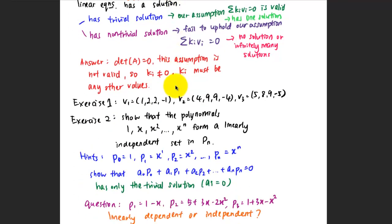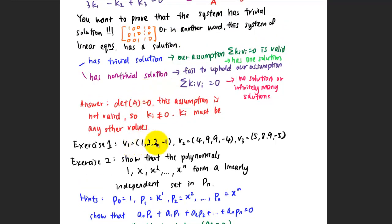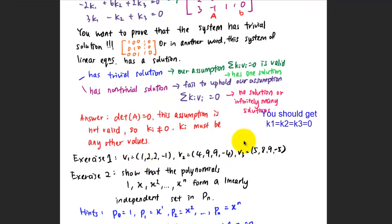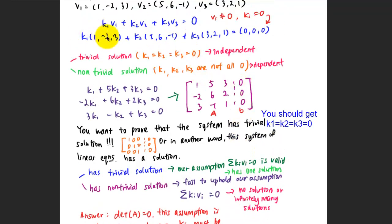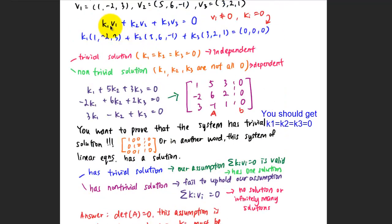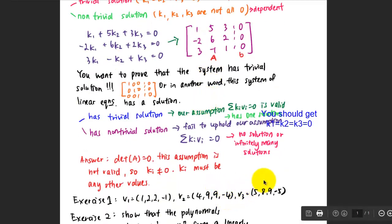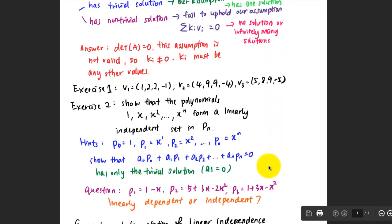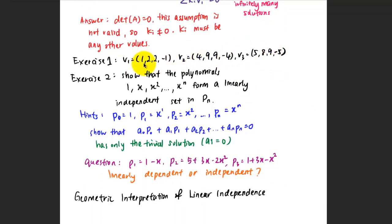For the first exercise, given v1, v2, and v3, follow the same steps: substitute into the assumption equation k1·v1 + k2·v2 + k3·v3 = 0, match corresponding components to form a system of linear equations, put it into augmented matrix form, and use the determinant method to check whether the assumption holds — or extend to k4·v4 if more vectors are given. This is left as an exercise for you to try.